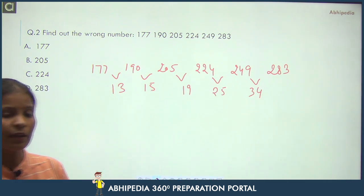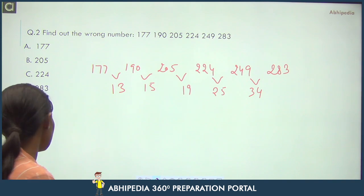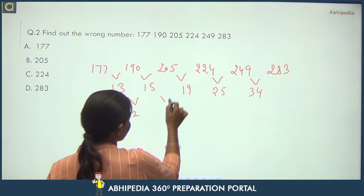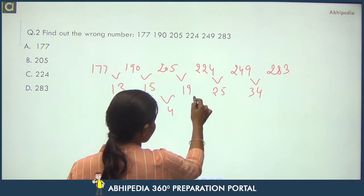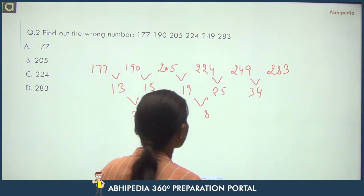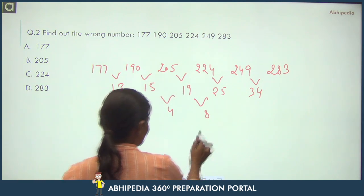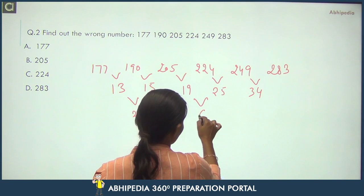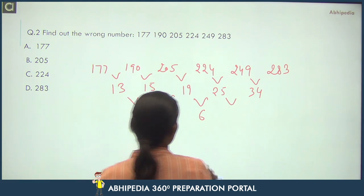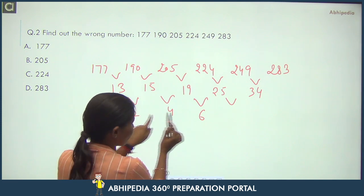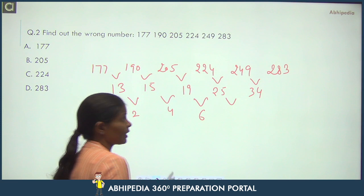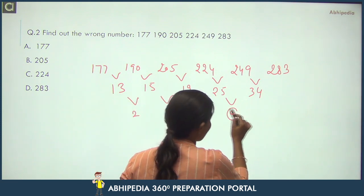The differences are: 13, 15, 19, 25... checking further differences between these: 2, 4. Then there should be a difference of 8, but here the difference is 6. Wait — let us check: 2, 4, 6, 8 — the difference pattern increases by 2 each time. So the next difference should be 8, but here the difference is 9.